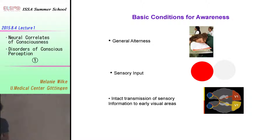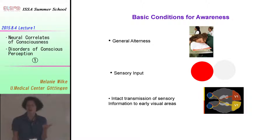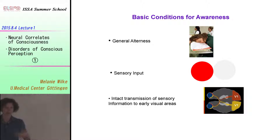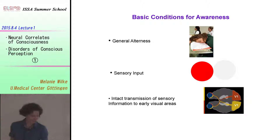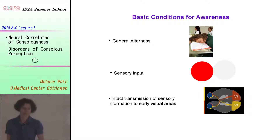What are the prerequisites for visual awareness? One prerequisite is that you are actually alert and awake and not sleeping. There needs to be some sort of sensory input, at least when we talk about awareness of the external environment — obviously there are sleep and dreams as well. And we do need an intact transmission from the sensory pathways, basically from the retina to the visual cortex.